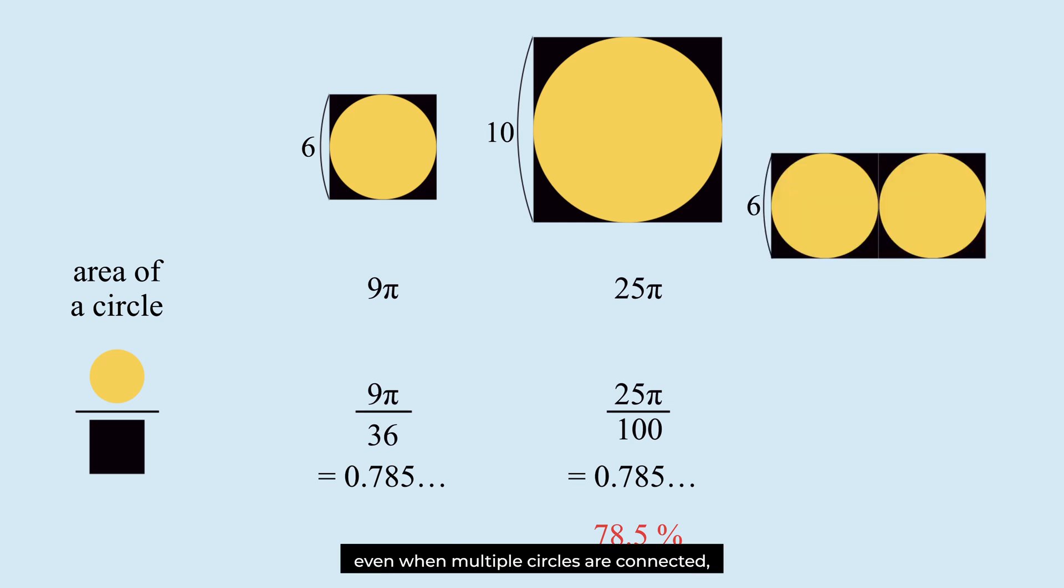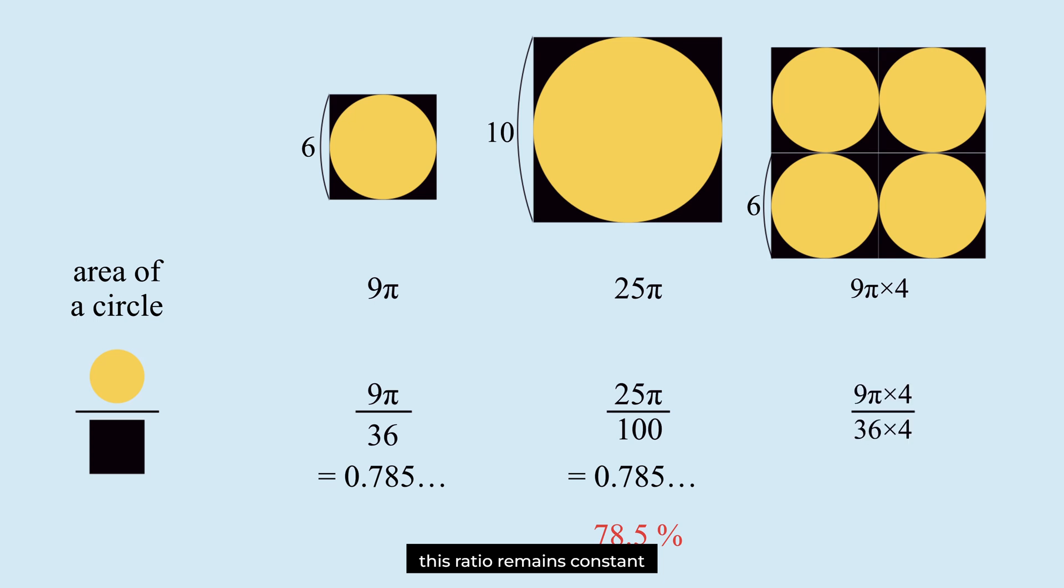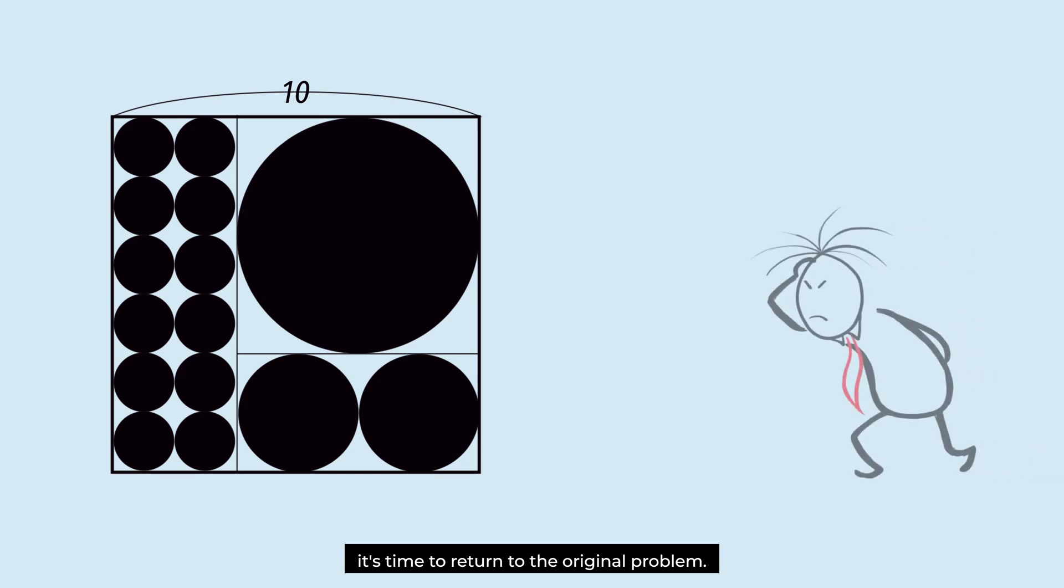When multiple circles are connected, this ratio remains constant as long as there is no overlapping or empty space. It's time to return to the original problem.